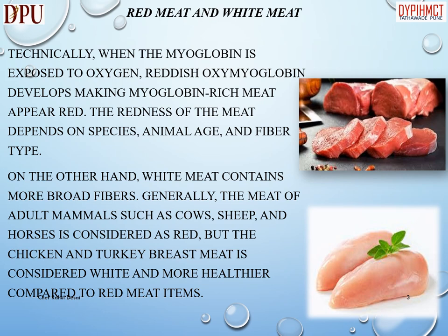Red meat and white meat: technically, when the myoglobin is exposed to oxygen, reddish oxymyoglobin develops, making myoglobin-rich meat appear red. The redness of the meat depends on species, animal age, and fiber type. On the other hand, white meat contains more broad fibers. Generally, the meat of adult mammals such as cows, sheep, and horses is considered red, but chicken and turkey breast meat is considered white and more healthy compared to red meat items.